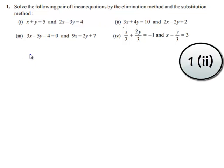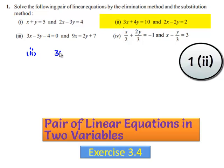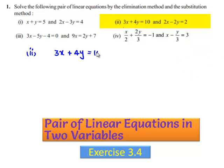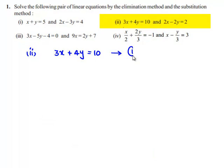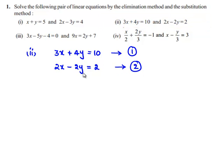Coming to the second bit: 3x plus 4y is equal to 10. Let this be equation number 1, and the second equation is 2x minus 2y is equal to 2. Let this be equation number 2. First, let us solve the given pair of linear equations by elimination method.